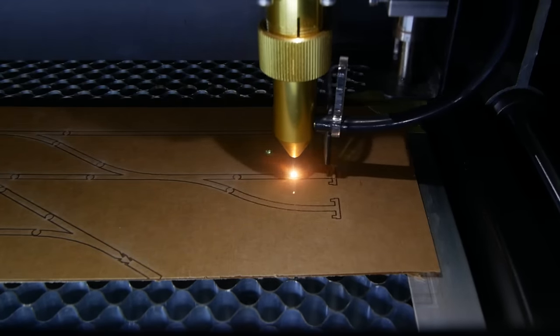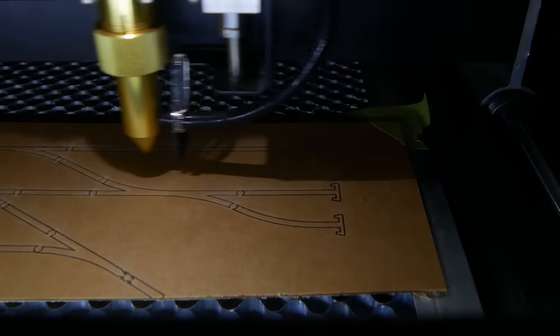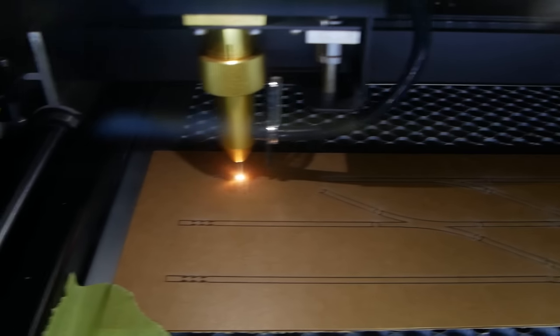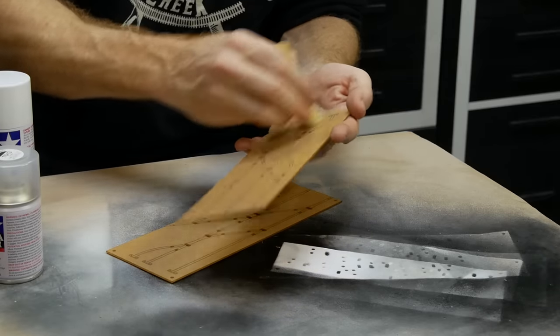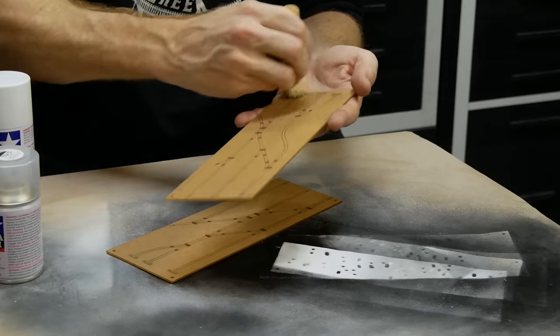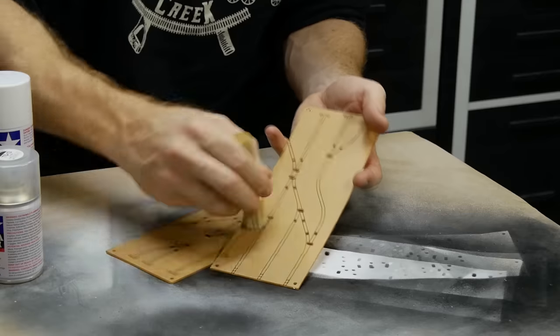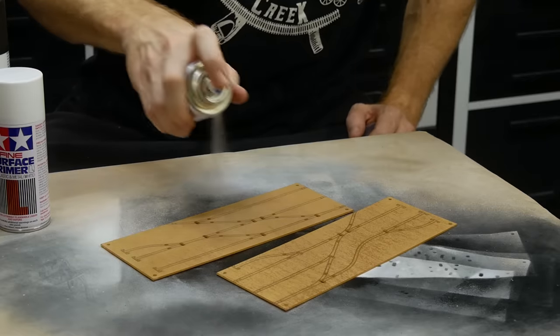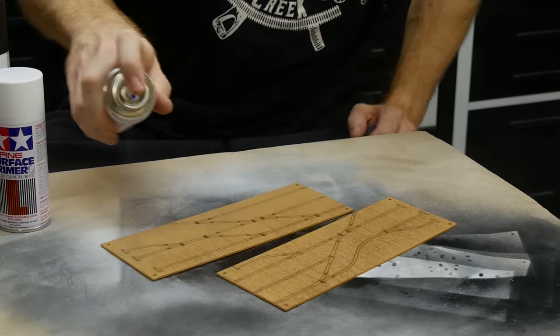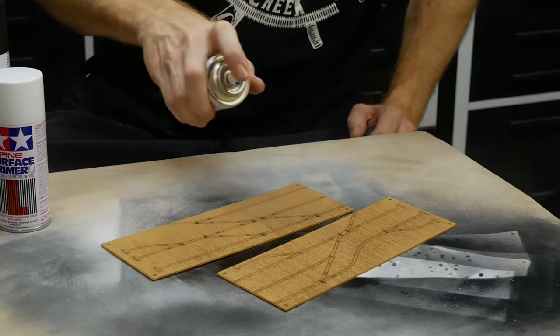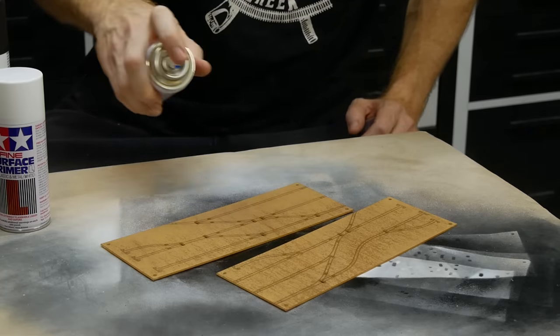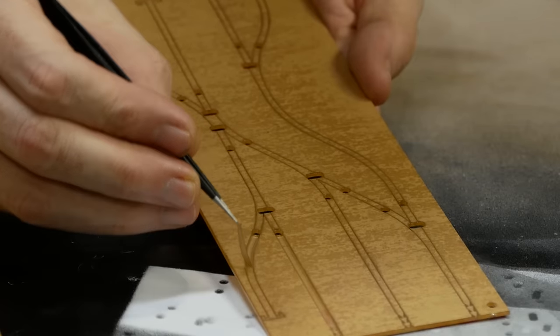The control panel fascia is laser engraved. Again this can be replicated with a simple paper template and a good sharp hobby knife for those who don't have access to a laser cutter. After removing the panel I give it a quick dusting to remove any burnt debris from the laser. Then it gets a spray of clear gloss to seal any small gaps in the protective paper sheet. That way when I spray the white and black it shouldn't bleed under the paper.